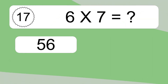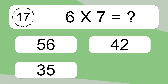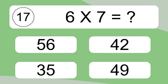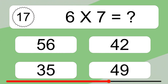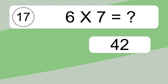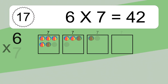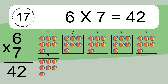6 times 7 equals what? 6 times 7 equals 42.